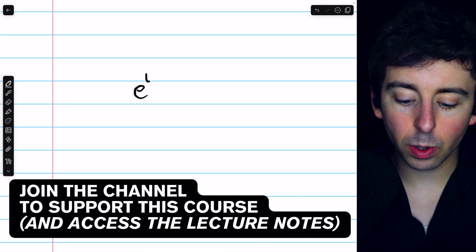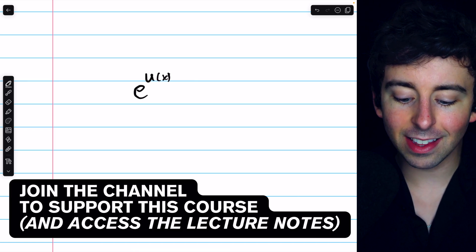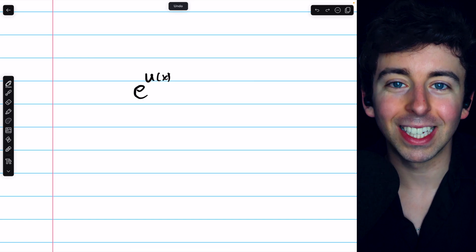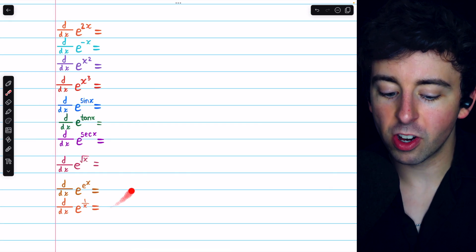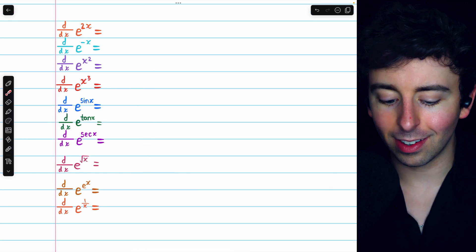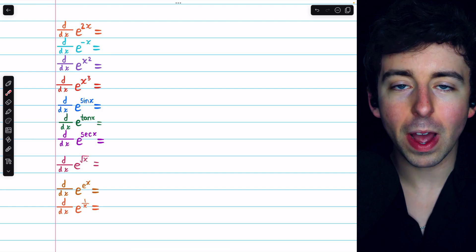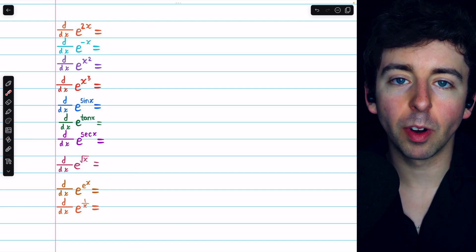If you have e to the power of some function, taking the derivative of this is really easy. We're talking about functions like this: e to the 2x, e to the sine x, e to the root x, e to the power of some function.